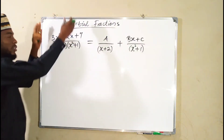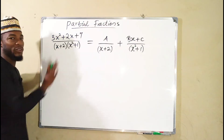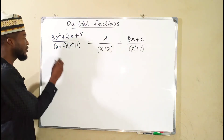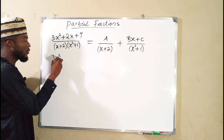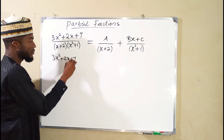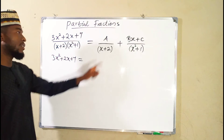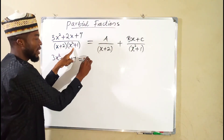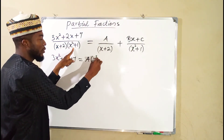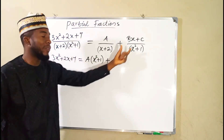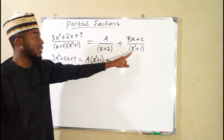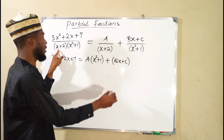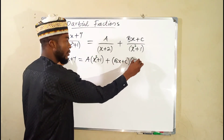To do that, let us multiply each of these fractions by the two factors. If you multiply the left-hand side by these two factors, they are going to be eliminated, leaving only the numerator: 3x squared plus 2x plus 7. On the other side, multiplying through, the denominators cancel, leaving a multiplied by x squared plus 1, plus bx plus c multiplied by x plus 2.